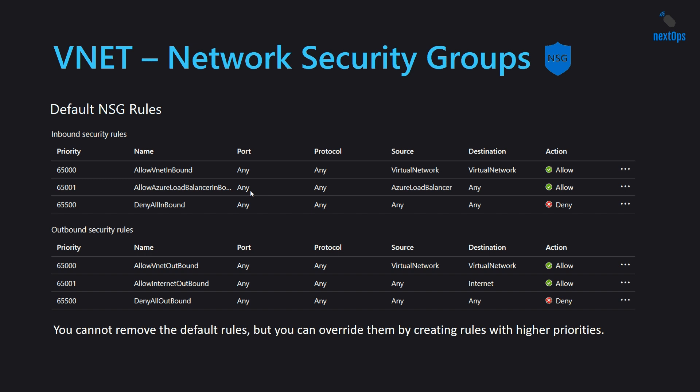When we create a new NSG, a few default rules will be automatically created by Azure. They will have the highest numbers and lowest priority, starting from 65,000.